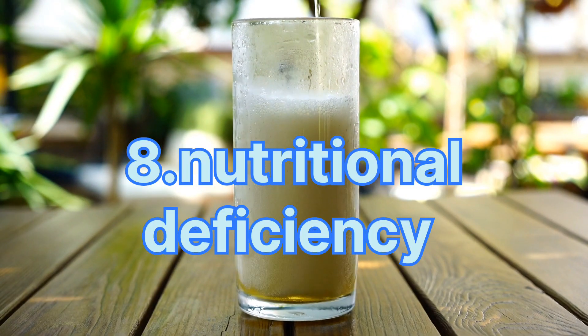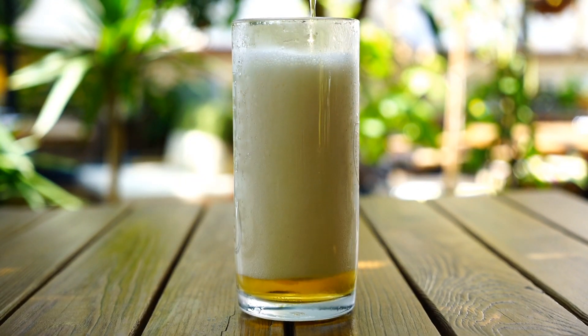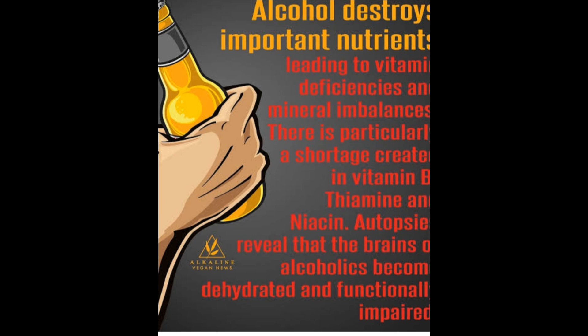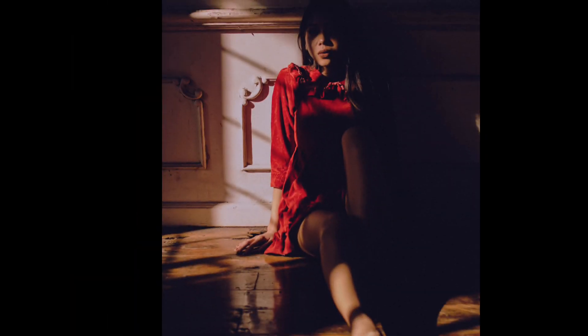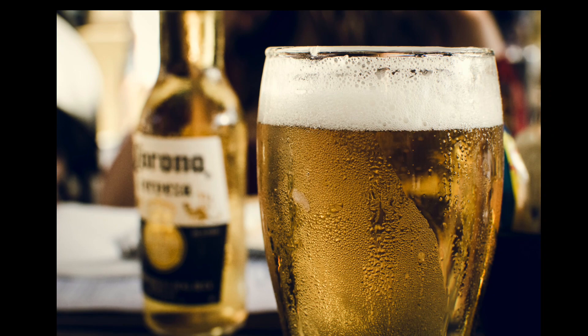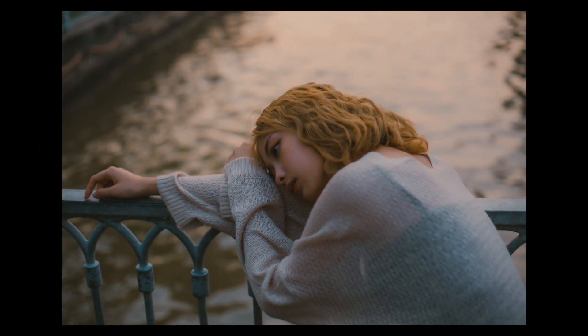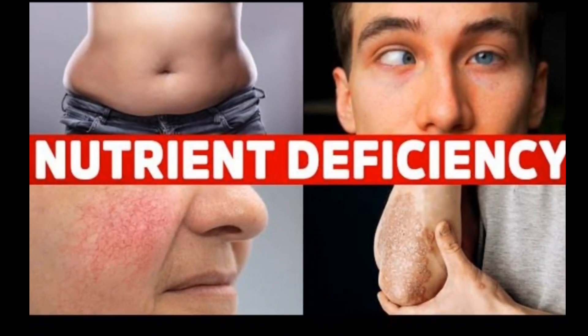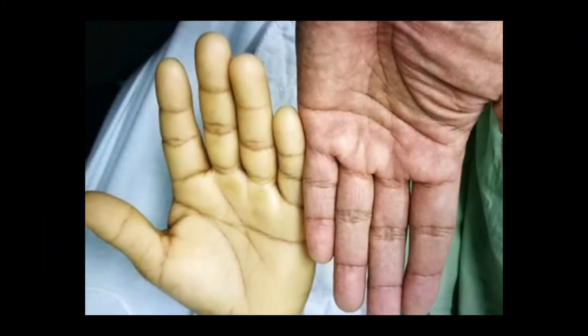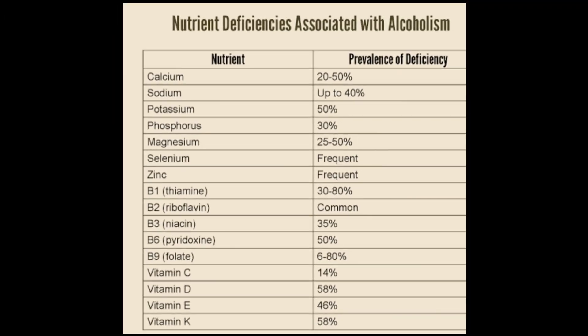8. Nutritional Deficiency. Alcohol inhibits the absorption of vitamins and nutrients by active transport processes. This effect is crucial in causing specific nutrient deficiencies in alcoholics. Not only is alcohol devoid of protein, minerals, and vitamins, it actually inhibits the absorption of vital minerals and nutrients, such as vitamin B1, B12, folic acid, and zinc.